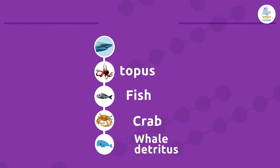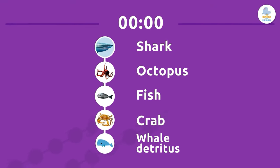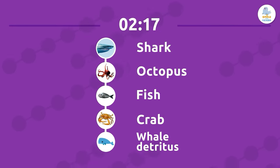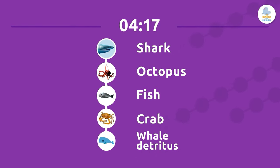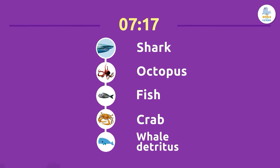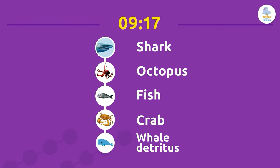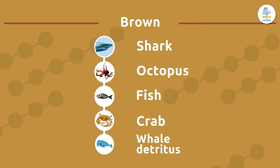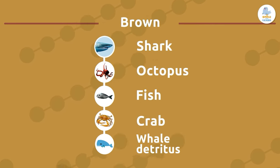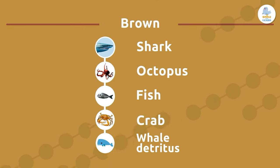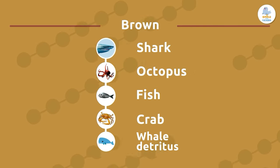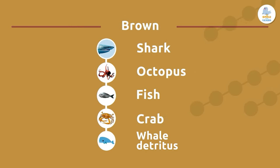On to the last one: green or brown? Brown — because it starts with detritus, the remains of a whale. See what I'm saying? Most food chains are brown!